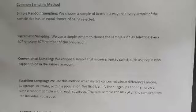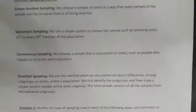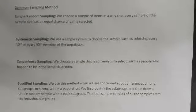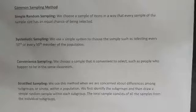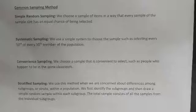Convenience sampling is just asking whoever is closest or most accessible. For instance, if I wanted to talk about the ACC population, convenience sampling would be asking just the people in my own class. It's the simplest approach — whatever is convenient to you.